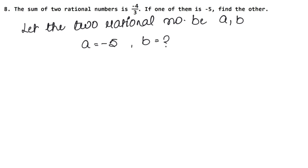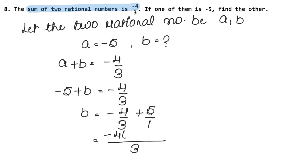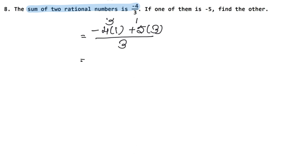The sum of both rational numbers is minus 4 upon 3. So A plus B equals minus 4 upon 3. One rational number is minus 5, so B equals minus 4 upon 3 minus minus 5. Below 5 there is nothing, so we write 1. We multiply directly: minus 4 into 1 plus 5 into 3 upon 3, giving minus 4 plus 15 upon 3.